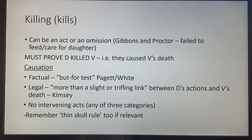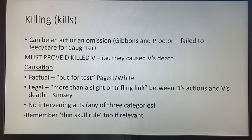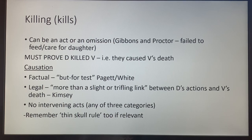Moving on to 'killing' — this can be done by an act or an omission. In Gibbons and Proctor, where they failed to feed or care for their daughter and starved her to death, that was seen as an omission and was sufficient for murder. It doesn't have to be an act. Because murder is a result crime, you have to prove that the defendant caused the death — so causation is key. You go through the same causation rules as for involuntary manslaughter.